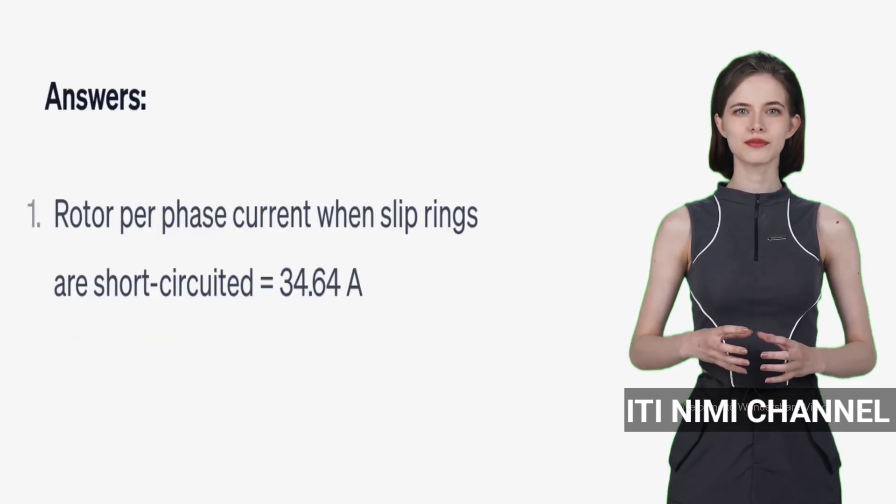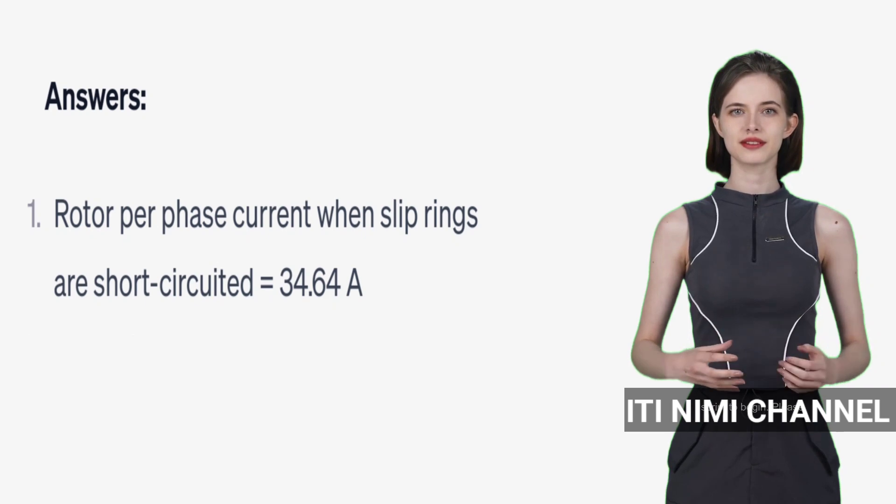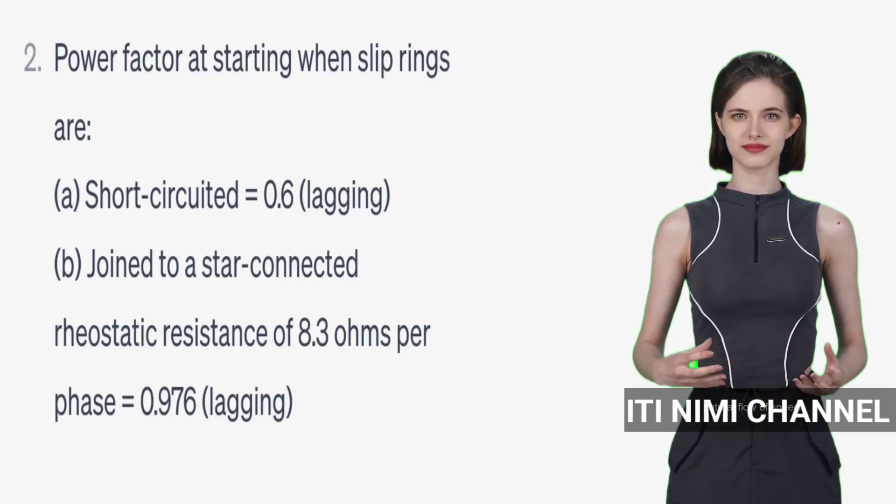So, in summary, for this motor, the rotor current at start is 34.64A and the power factor varies based on the connection of the slip rings.